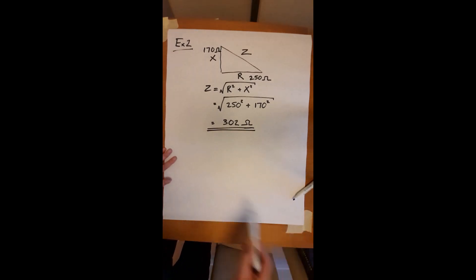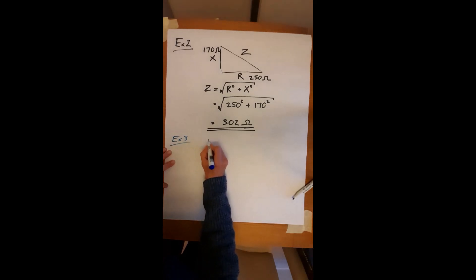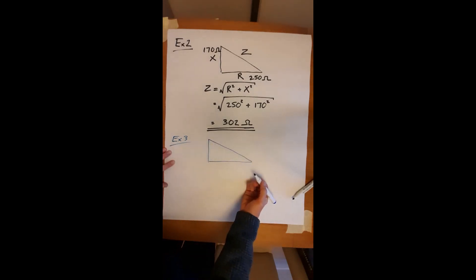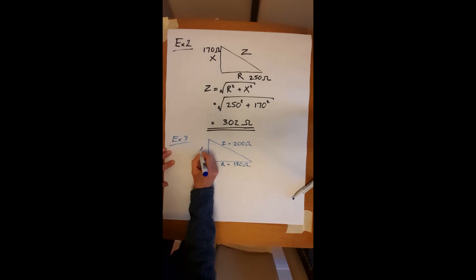Let's have a look at the final example, and I'm just going to change things very slightly. So in the question I've given you, I've actually given Z as 200, I've given you R as 180, and on this occasion you have to find X.